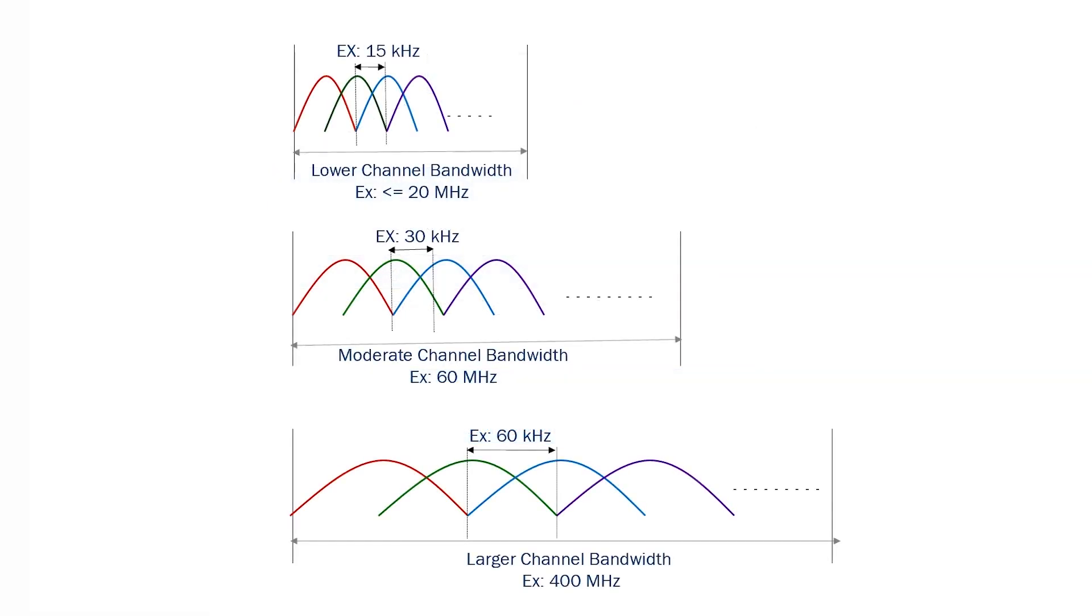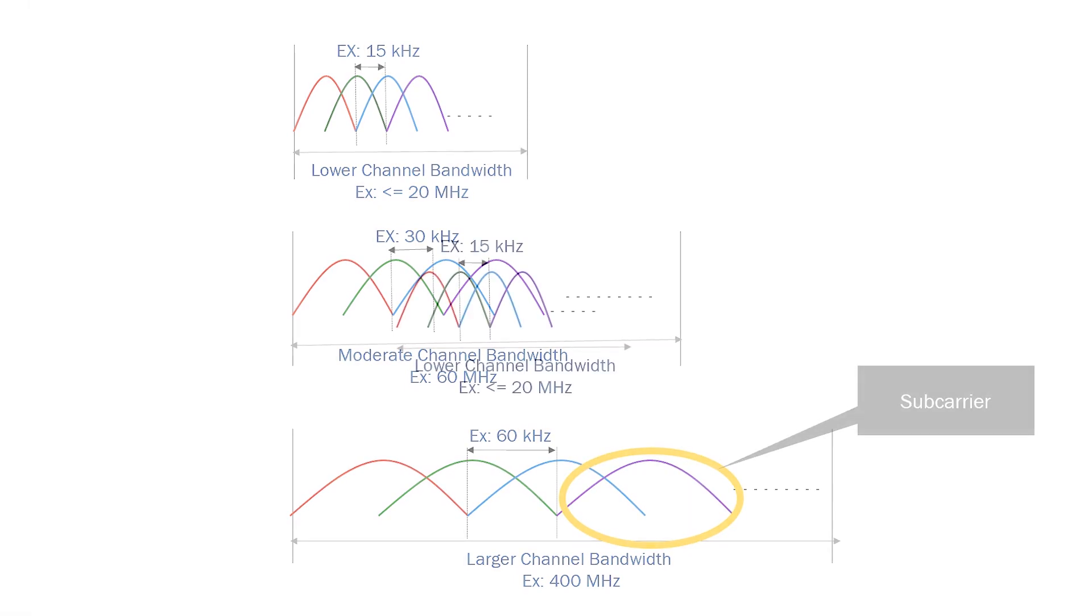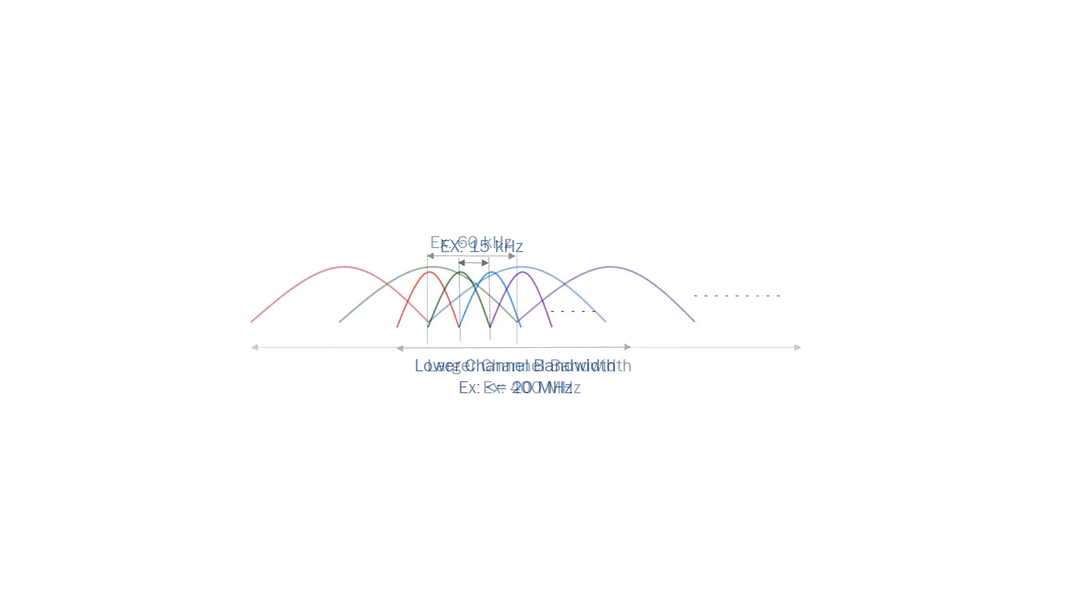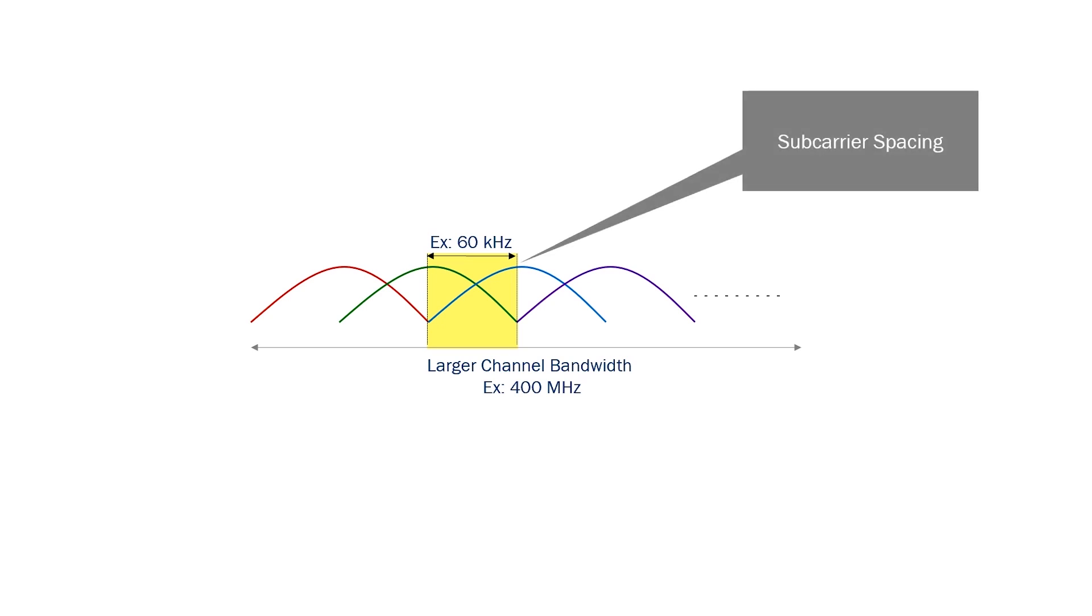In addition, the pipe is larger in 5G, up to 400 MHz. The pipe is subdivided into individual data streams, or subcarriers. An important characteristic of the transmission is that the larger the separation between the subcarriers, the less time it takes to transmit the same amount of data.